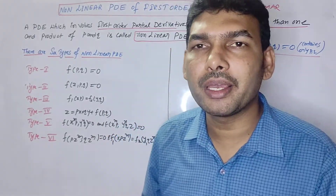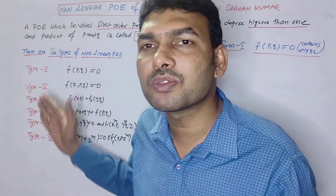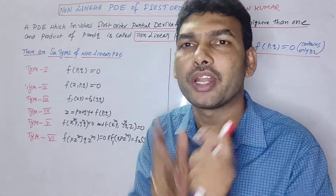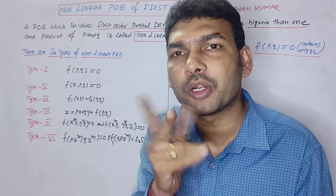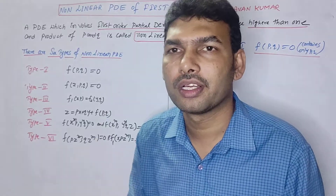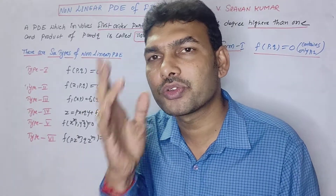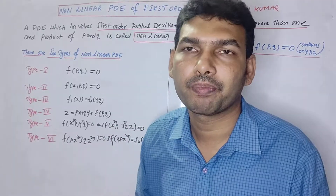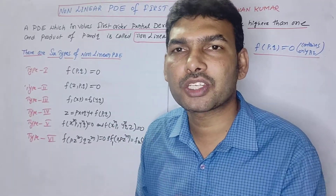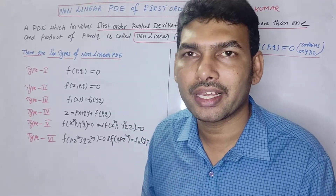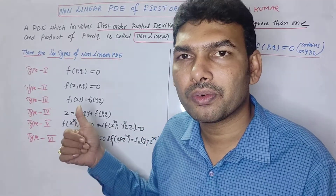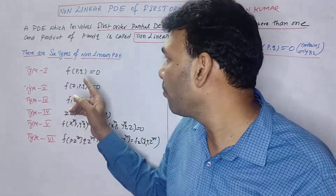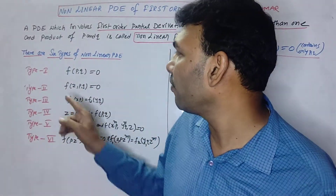For non-linear PDE, we have six standard forms. The first form contains only P and Q. Examples include: P into Q equal to 1, P squared plus Q squared equal to M squared, and P squared plus Q squared equal to 1 plus M squared.